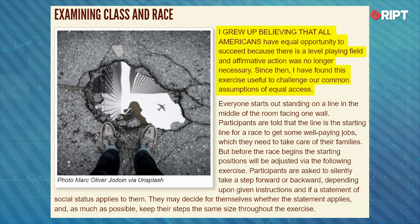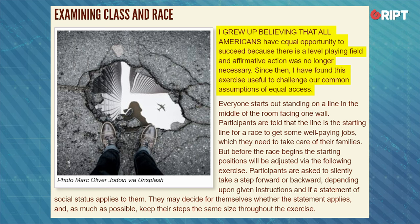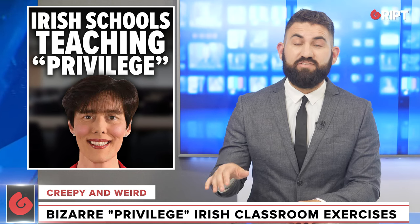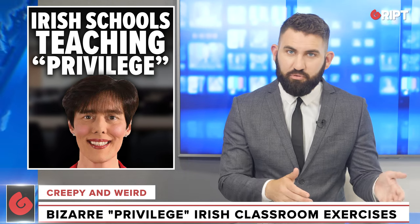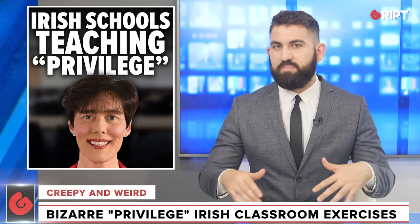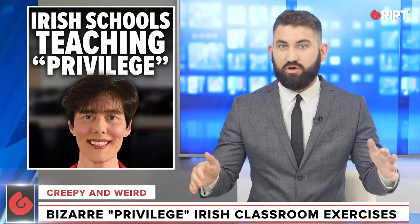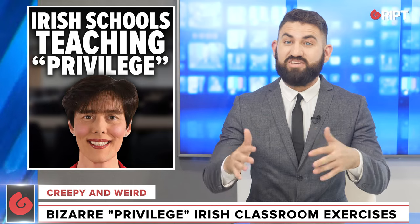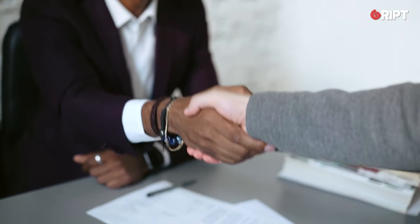The task, officially recommended for Irish classrooms, begins: 'I grew up believing that all Americans — or in this case Irish — have equal opportunity to succeed because there was a level playing field and affirmative action was no longer necessary. Since then I have found this exercise useful to challenge our common assumptions of equal access.' Affirmative action means giving special advantages to groups seen as underprivileged — offering more jobs to women, ethnic minorities, or gay people. So this exercise is arguing that Ireland still needs to offer artificial job and education advantages to these special groups.